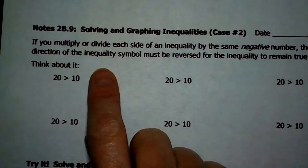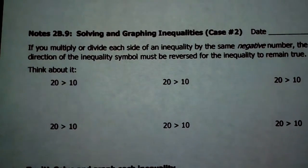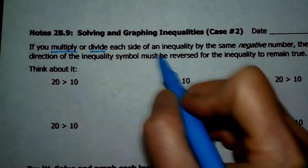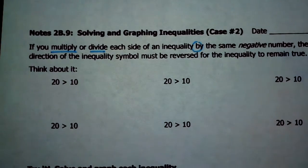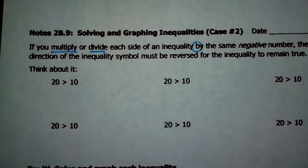So one little thing that's kind of strange about inequalities: if you multiply or divide each side of an inequality by the same negative number — so not add or subtract, if you multiply or divide each side by the same negative number — the inequality symbol actually has to be reversed, or it won't be true anymore.